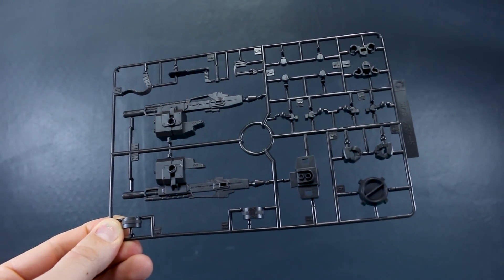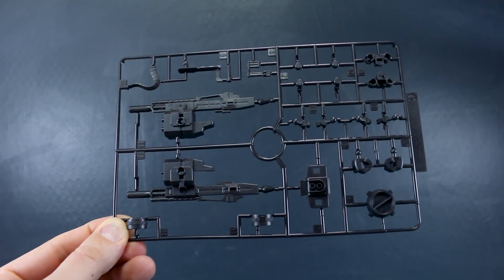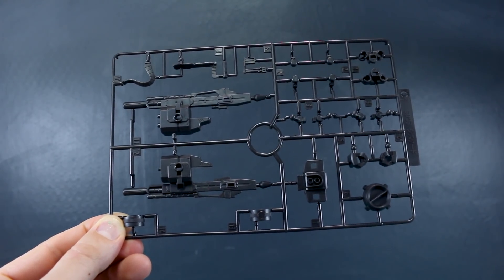And finally, runner C is mostly parts for the big giant gun. But we do have a couple other parts there on there for the hands and a few other parts for around on the kit. But this is in that dark, a little bit metallic gray kind of color. So it's pretty nice looking.